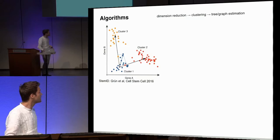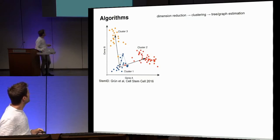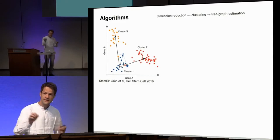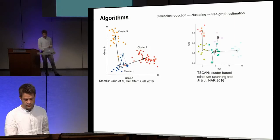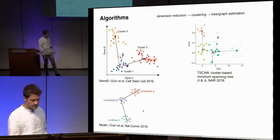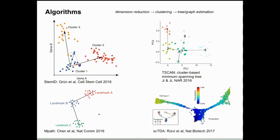We heard about Dominic's work, STEM ID — I think it's a follow-up of that in Alex's lab — where they determine the clusters and connect adjacent clusters to learn about transitions. T-scan is a similar method, as well as MPath, and I won't go into details with those. Quite recent work you might not have seen uses topological data analysis, which has a more fancy way of collecting clusters and also learning the particular embedding at the same time.